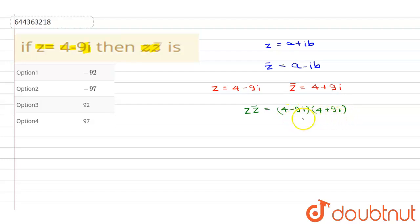Now see this is in the form of a minus b into a plus b, therefore it will be a square minus b square. Therefore z into z cap will be equal to 4 square, 4 square is 16 minus 9, 9 square is 81i square.